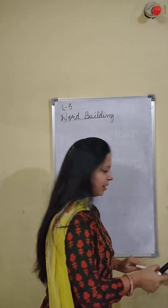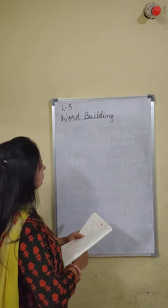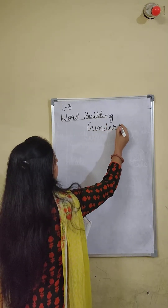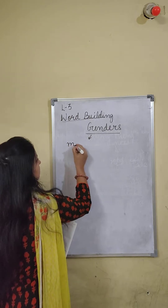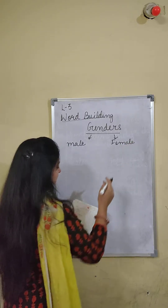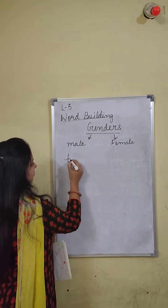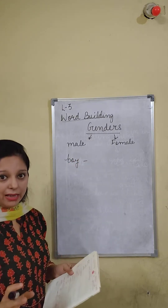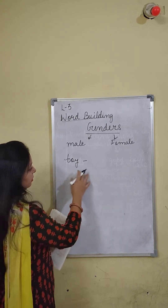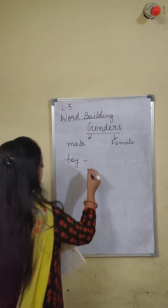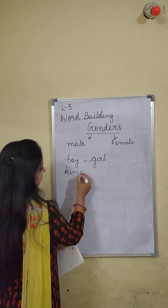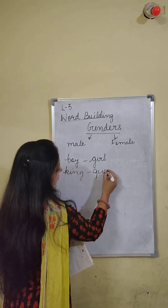So let's solve the exercise. You have to match with the correct gender. Gender is either male or female. Let's start with the first one: boy. You have to match it — please write it neatly, don't make a mess or crossing lines. Boy matches with girl. Now king — king means raja — king matches with queen.